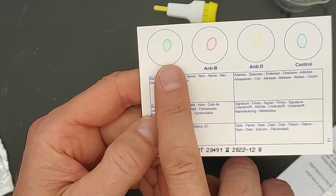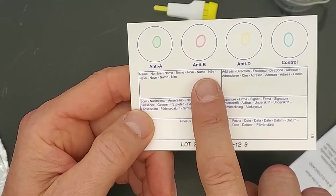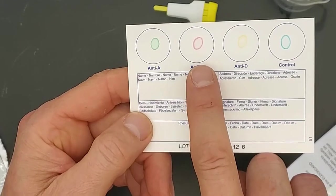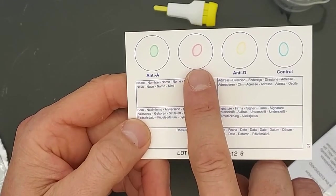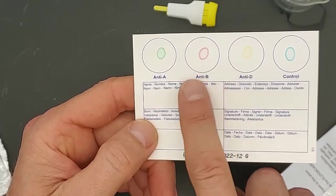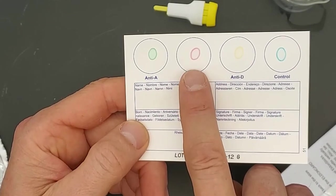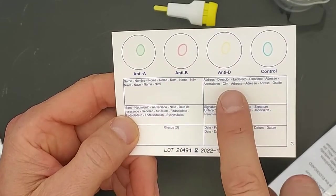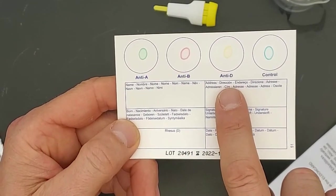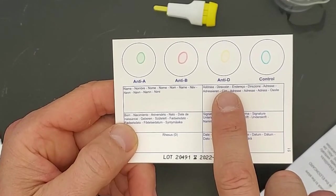In the anti-B circle, there are antibodies against B antigen. Before we add anything else to the card, there's dried antibodies against B there. And then the anti-D circle, that represents RH, also known as the rhesus factor.